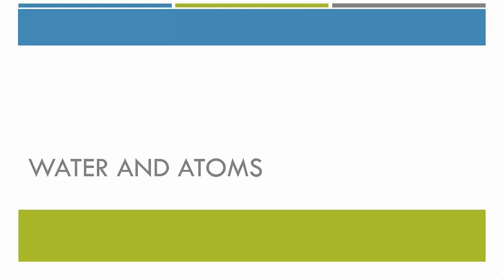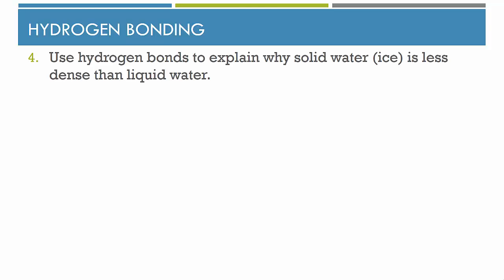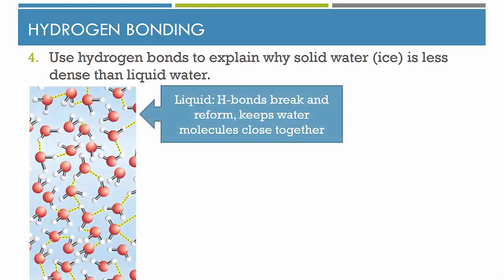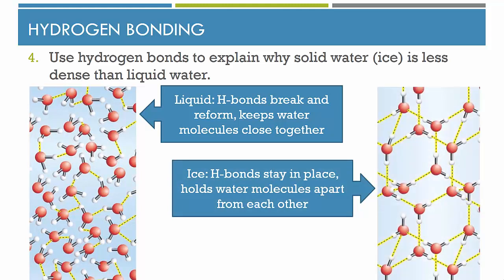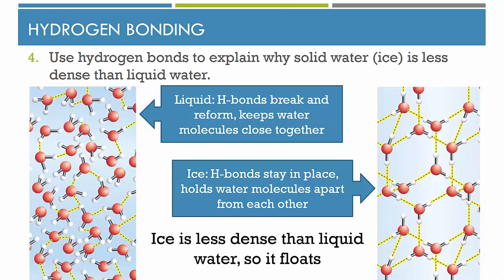The next set of questions are about water and atoms. Use hydrogen bonds to explain why solid water, also known as ice, is less dense than liquid water — basically, why does ice float? In liquid water, hydrogen bonds are constantly breaking and reforming, keeping water molecules close together. As the water cools, those hydrogen bonds snap into place, forming a neat lattice structure with a lot of holes in it. Because those hydrogen bonds hold the water molecules apart, it's less dense as a solid — so ice is less dense than liquid water and floats.